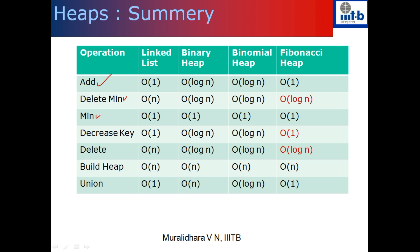Given the heap, we should be able to tell what is the minimum element. Then decrease key and delete — the delete is basically implemented in all cases as decrease key plus delete minimum. So the complexity of delete will be the complexity of delete min plus decrease key. The other important operations we want to do are build heap and union. The minimum is easy to keep track of — you just keep a pointer to the minimum. And build heap is going to be O(n) in all cases.